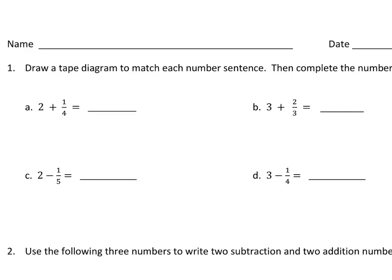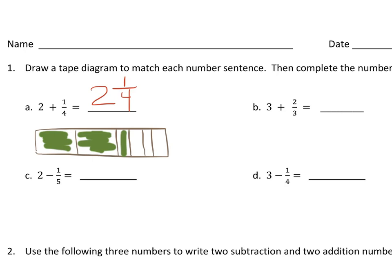So in the beginning, now it seems kind of ridiculous to demonstrate 2 plus 1/4, because that's obviously 2 and 1/4. But on a tape diagram, what they're asking for is that you have some kind of representation that is two wholes, and then the last piece is split into fourths. So we could say that this is 1, 2, and 1/4.